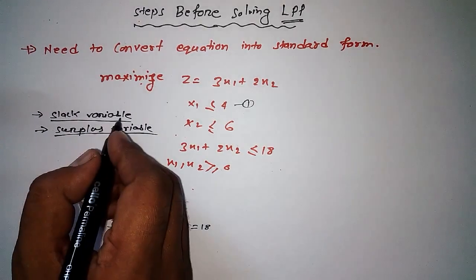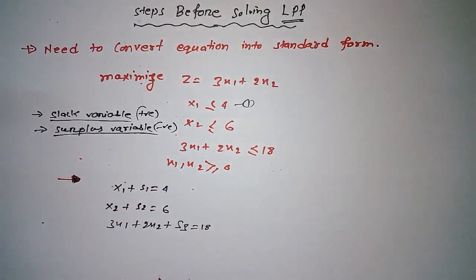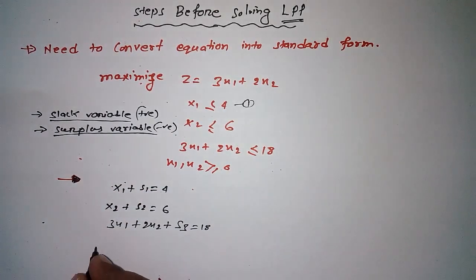is equal to 18. We are using slack which is for positive, and this is for negative, remember that. Now we can write